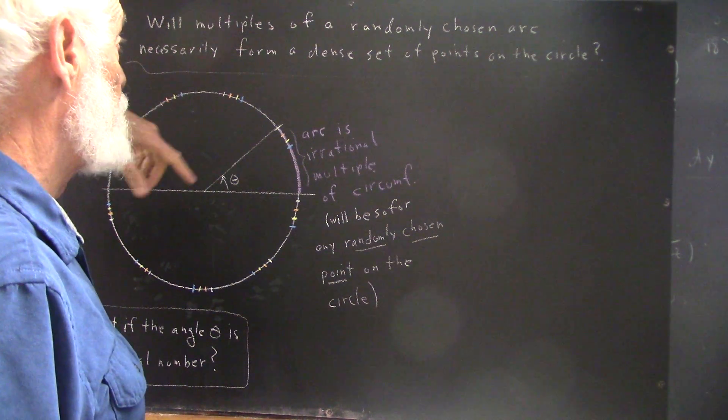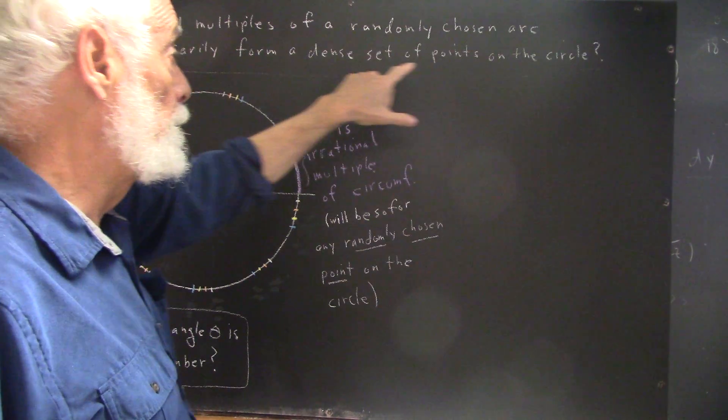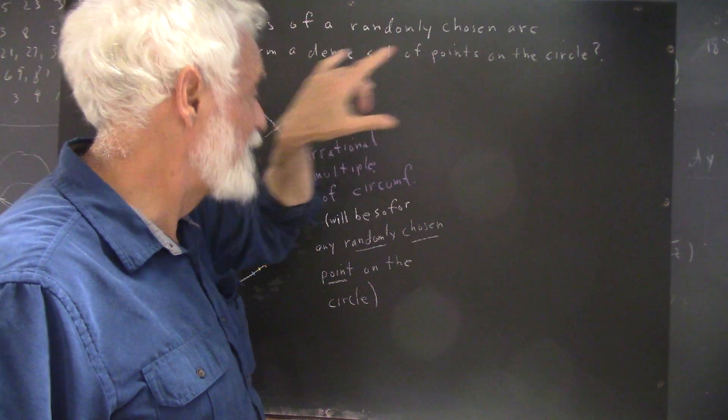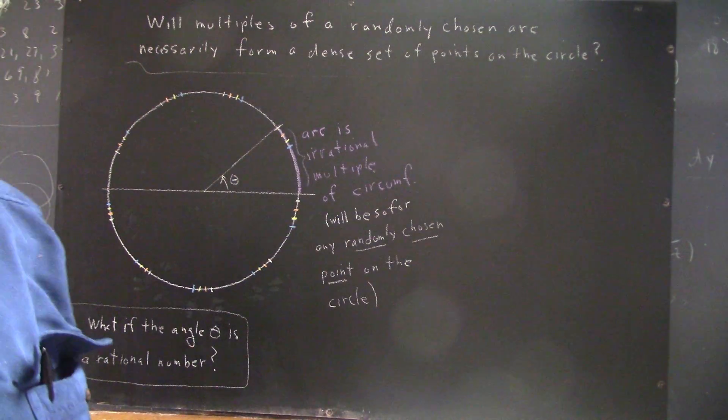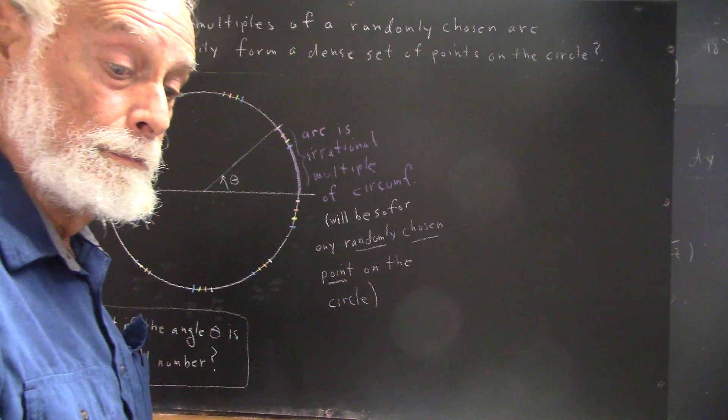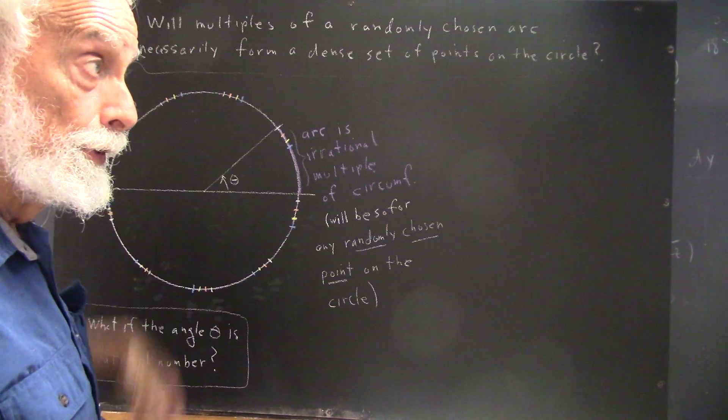The question is, will multiples of a randomly chosen arc necessarily form a dense set of points on the circle? Now, let me explain what I mean by that. Okay, here's an arc, a randomly chosen arc.